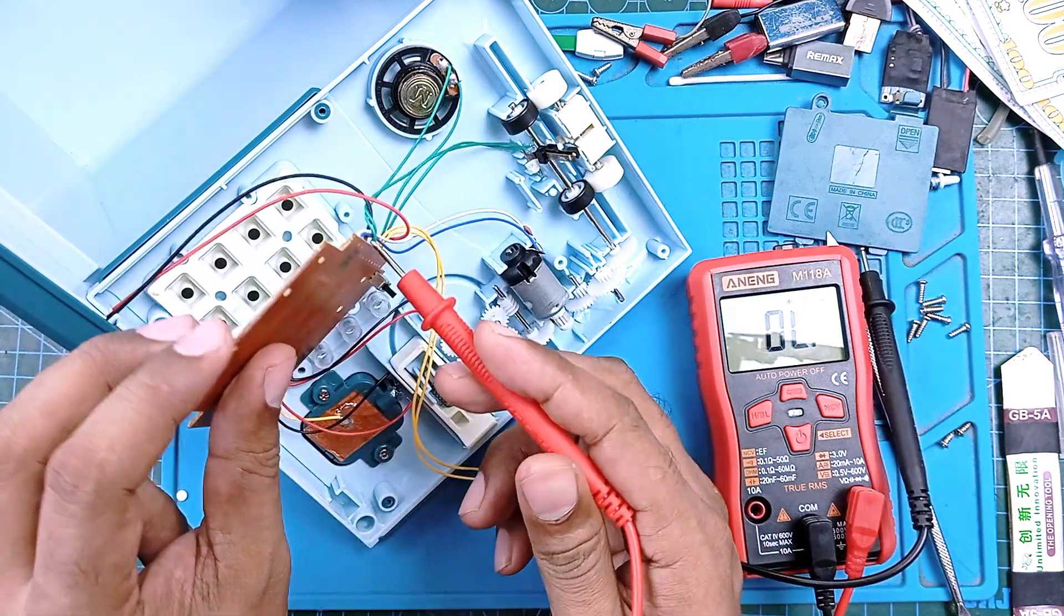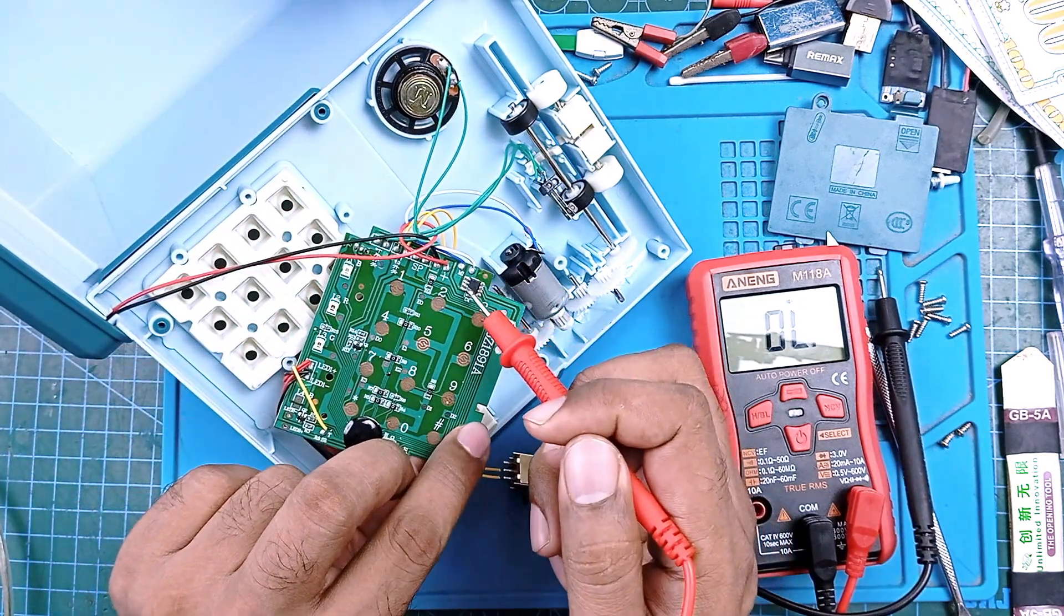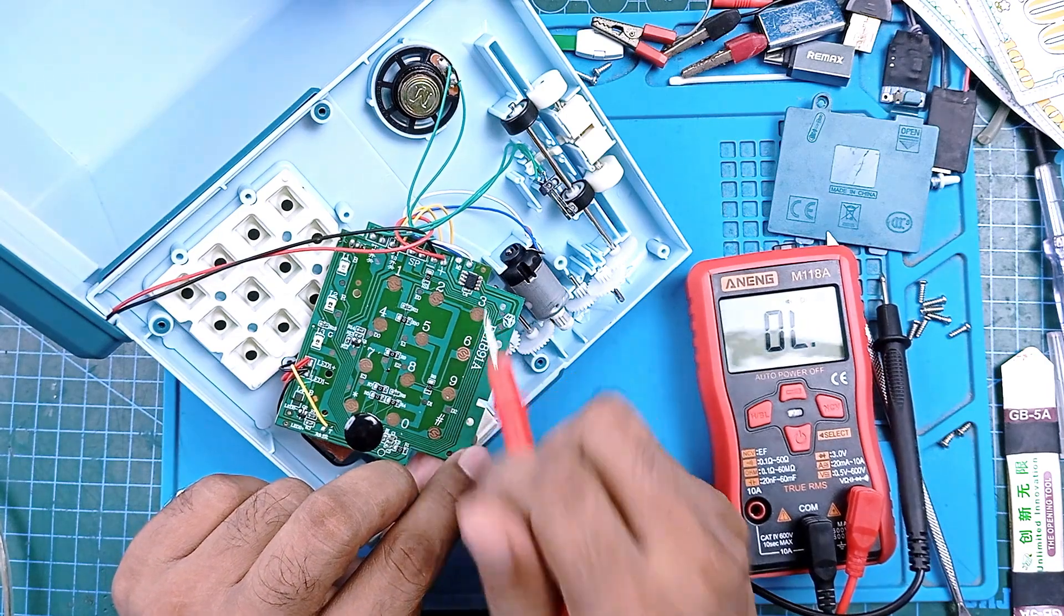So we can say this one is the motor controller because the motor is directly connected to this chip. This motor controller is not good, it's short, so assemble it again and move to the next one.